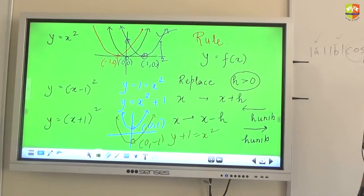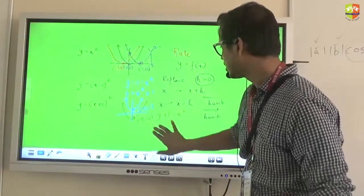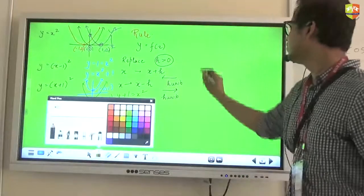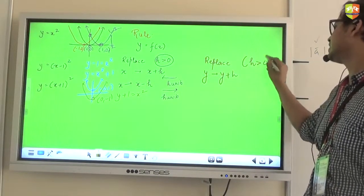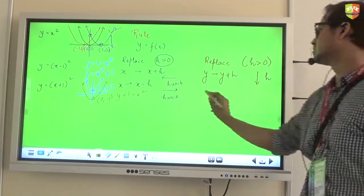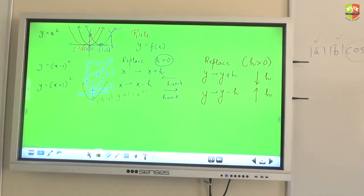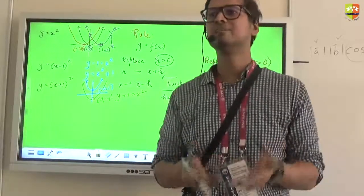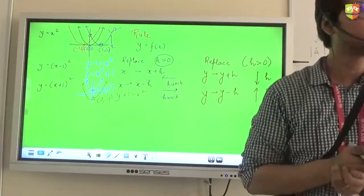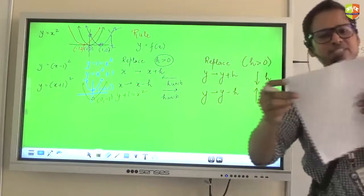So, what will happen if I ask you to plot the graph of y plus 1 equal to x square? Where will be the vertex now? 0 comma minus 1. So, can I make a rule out of it? Can I append this rule and say that if you replace y with y plus h, of course, h is again a positive quantity, the graph will go h units down. And when you replace your y with y minus h, the graph will go h units up. So, playing with x shifts the graph sideways. Playing with y shifts the graph up and down. Understood? Can I combine these two rules and give you a problem? Will you be able to solve it? This is the handout which I am going to anyways give it to you.